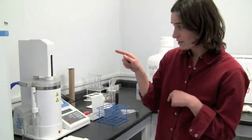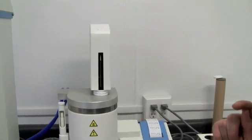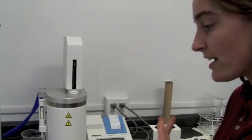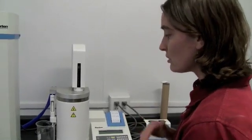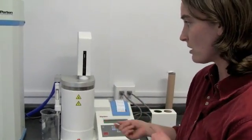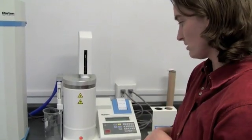The plunger is starting to fall, and we'll see how fast it goes. With high sprout damage, there's a lot of alpha amylase enzyme, and that enzyme breaks down starch. So the more starch is broken down, the thinner this mixture of flour and water is, and the faster the plunger falls.